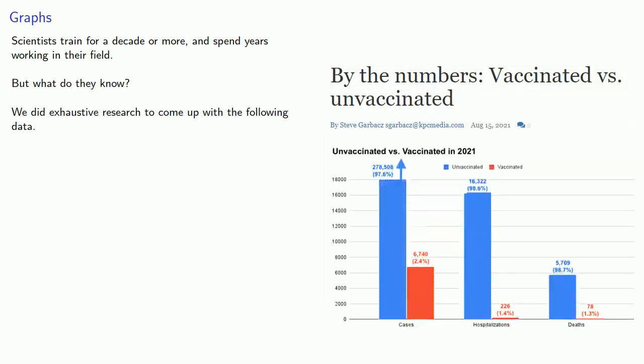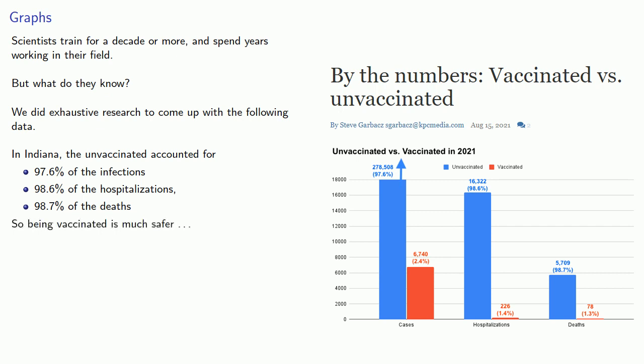So in this data for Indiana, we find that the unvaccinated accounted for 97.6% of the infections, 98.6% of the hospitalizations, and 98.7% of the deaths. And so being vaccinated is much safer. At least that's what they want you to believe.